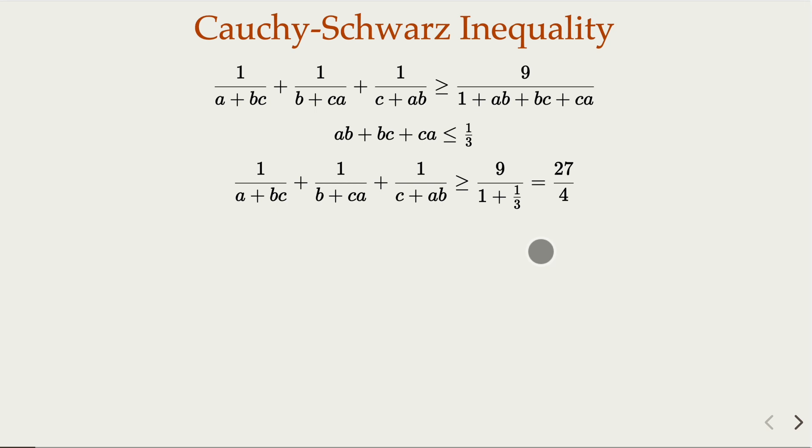So we start with the Cauchy-Schwarz inequality for fractions, and then we use AM-GM inequality to figure out ab plus bc plus ca.